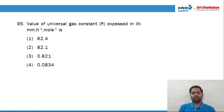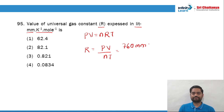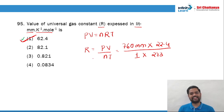Question 95: the value of the universal gas constant expressed in litre mmHg per kelvin per mole. From PV = nRT, R = PV/nT. Pressure is 760 mmHg, volume is 22.4 L, n = 1 mol, T = 273 K. Solving this gives R = 62.4 L·mmHg·K⁻¹·mol⁻¹. So question 95, option 1 is the right answer.